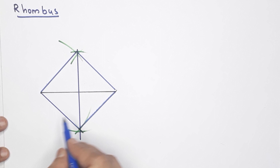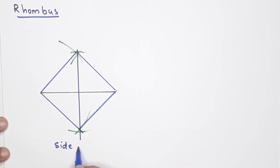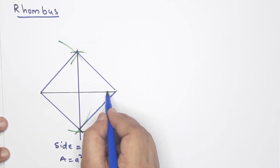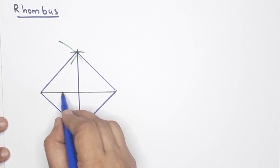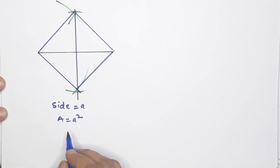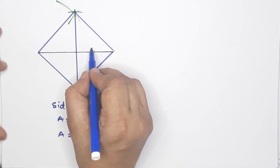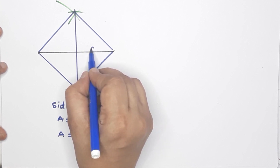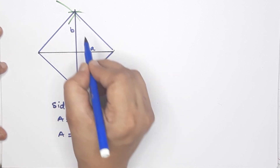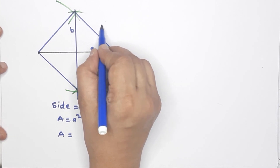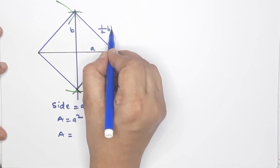Let's look at the square. The square has side A. The area is equal to A squared. Now, if the side is given as a diagonal, you have to find the area. The diagonal is given — we can find A. So A squared is half base into height.